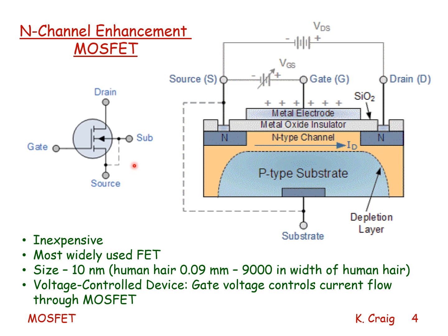Here is the circuit representation of the n-channel enhancement MOSFET: the gate, the drain, source, and the substrate connected to the source. The arrow indicates the direction from the P-type material to the N-type material. The dashed line between the drain, the substrate, and the source — rather than a solid line — indicates that in order for this to be turned on, a positive voltage needs to be sent to the gate. So with zero volts to the gate, this is a normally off transistor.